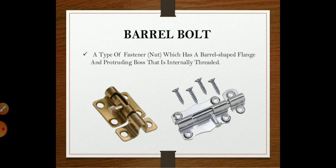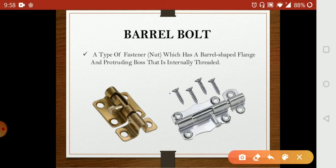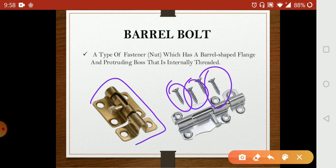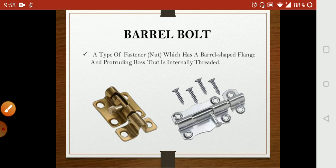The next is the barrel bolt. It is a type of fastener — a nut — that has a barrel-shaped flange and a protruding boss that is internally threaded. The shape of the bar is like a barrel. You can see here the threading — it threads directly into these holes. This is called the barrel bolt.